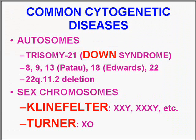The classical cytogenetic diseases involve autosomes and chromosomes. We're going to talk about the single most common cause of mental retardation in the United States — an extra number 21 chromosome called trisomy 21 or Down syndrome. You can also have trisomies at number 8, 9, or 13. In the case of 13, it's called Patau syndrome.